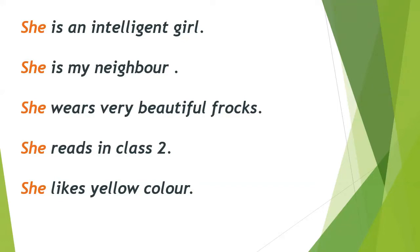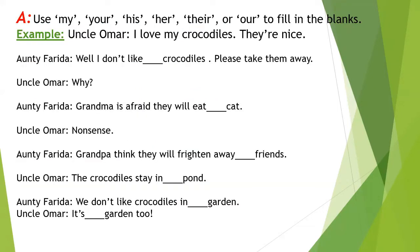Now move on to Exercise A. Exercise A says: use 'my,' 'your,' 'his,' 'her,' 'our,' or 'their' to fill in the blanks. Let's start. Uncle Umar says: 'I love my crocodiles, they are nice.' Auntie Frida replies: 'Well, I don't like blank crocodiles, please take them away.' Auntie Frida is talking to Uncle Umar and she doesn't like his crocodiles, so we will use 'your.'